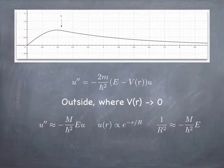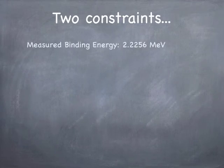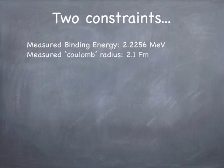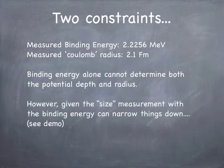So the binding energy and the size of the deuteron are tied together. We have two constraints to satisfy: the binding energy is a little over 2 MeV, and the charge distribution spreads out to 2.1 Fermi. The binding energy alone isn't enough to determine both the depth and the size of the well — it's only a single data point. But combining the size information from the charge distribution with the binding energy narrows things down. I have a little demo to illustrate that.